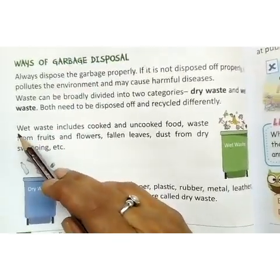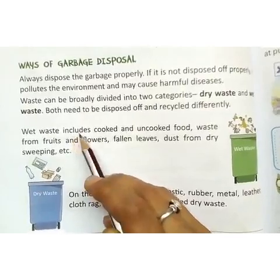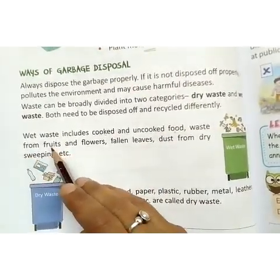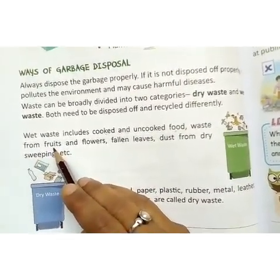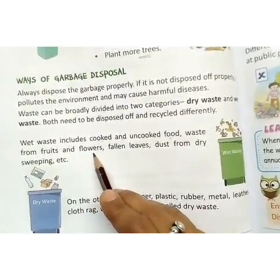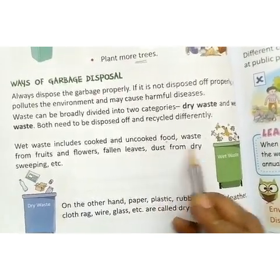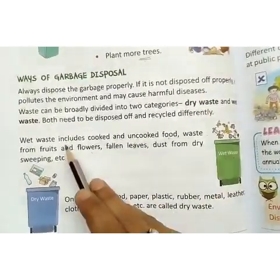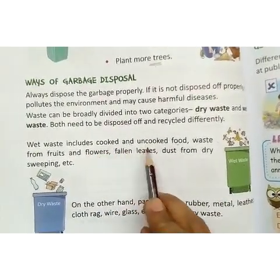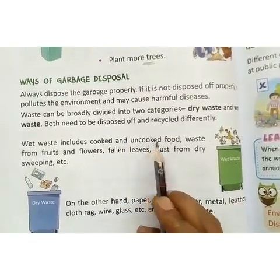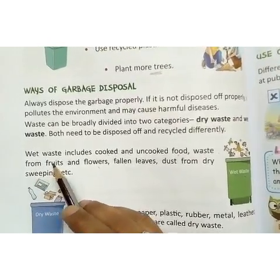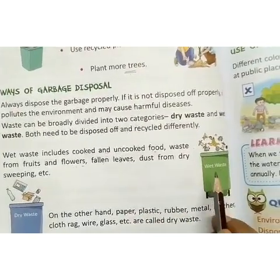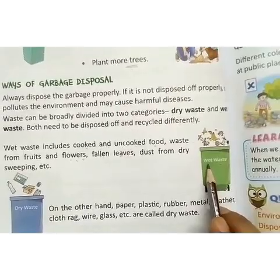Now let us learn what is wet waste. Wet waste includes cooked and uncooked food, waste from fruits — that means the peel of fruits and vegetables — and flowers from the garden, fallen leaves, and dust from dry sweeping. All this comes under wet waste. You have to collect all the waste from the kitchen which is cooked or uncooked, the peels of vegetables and fruits, and your garden waste — all goes in the green dust bin.